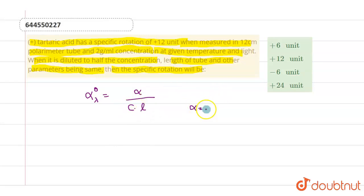Alpha is the angle or degree of rotation, C is concentration, and L is length of the polarimeter tube. This is the specific rotation formula.